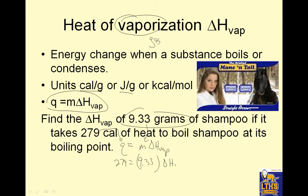So 279 equals 9.33 times delta H vap. That's what I'm looking for. So I actually need a calculator for this one because I'm not dividing by 10. So I have 279. Divide both sides by 9.33. Remember that cross-multiply thing we talked about? Equals delta H vap. Delta H vap equals 279 divided by 9.33. And I get 29.9. And the units, again, are calories per gram.